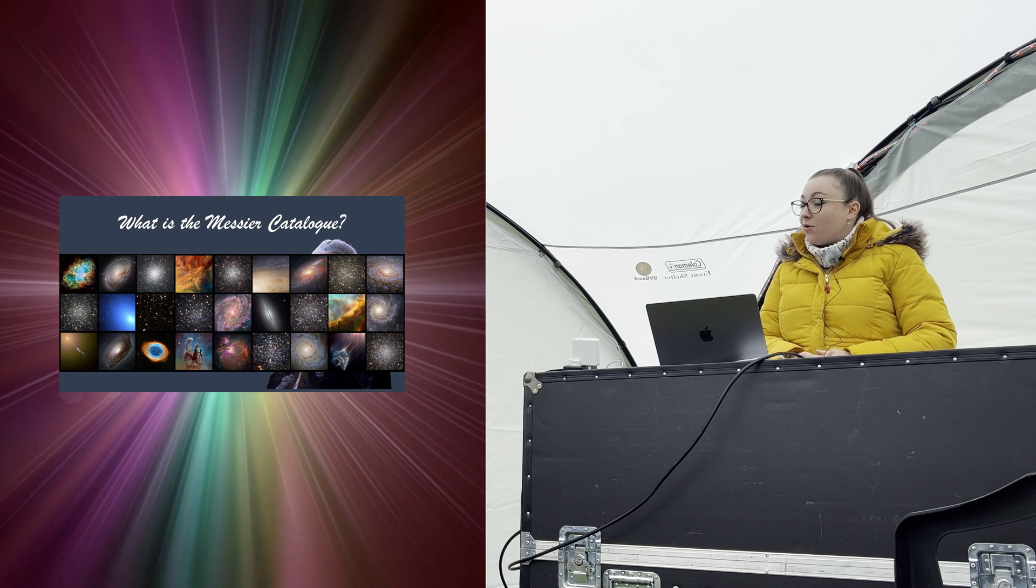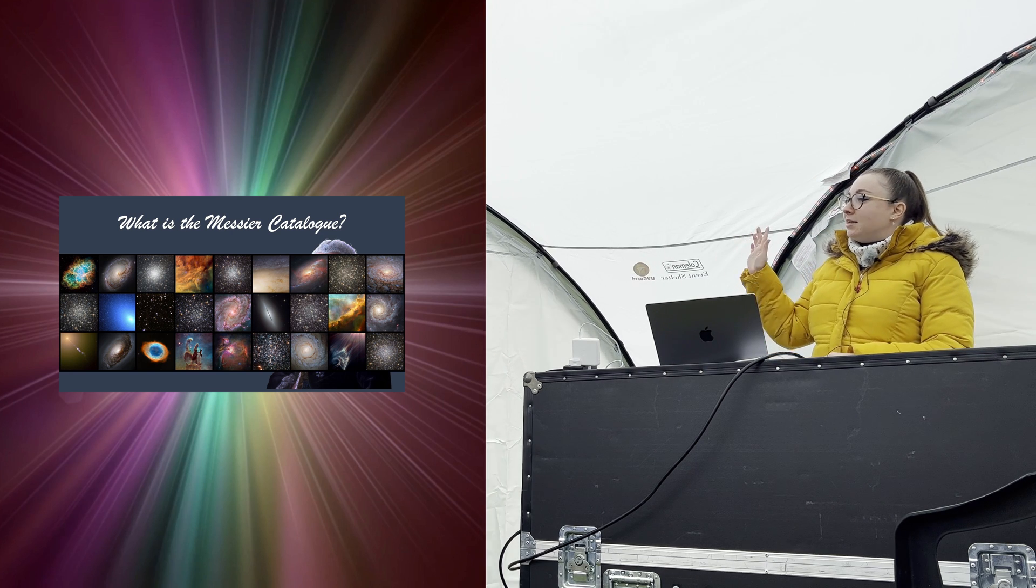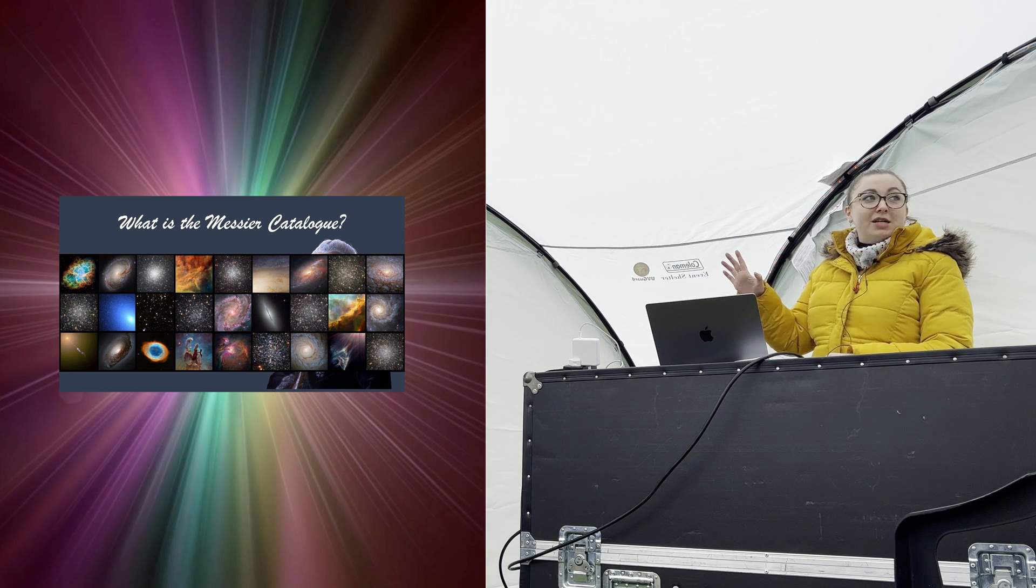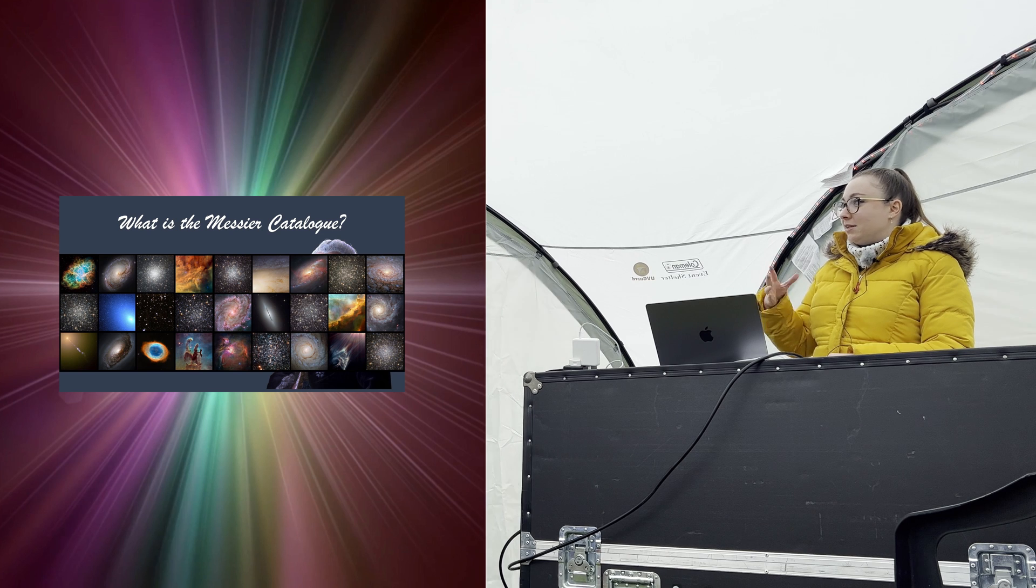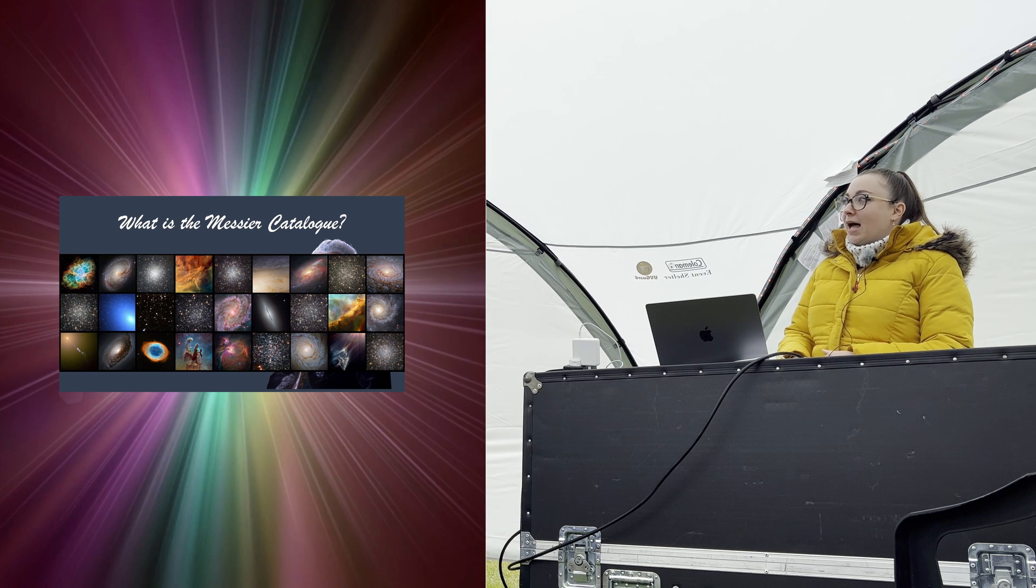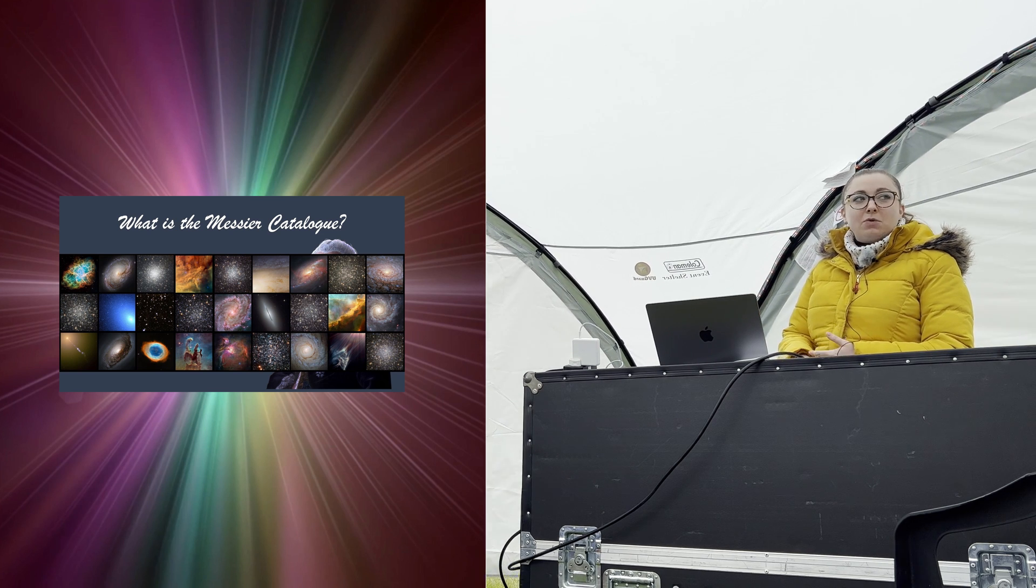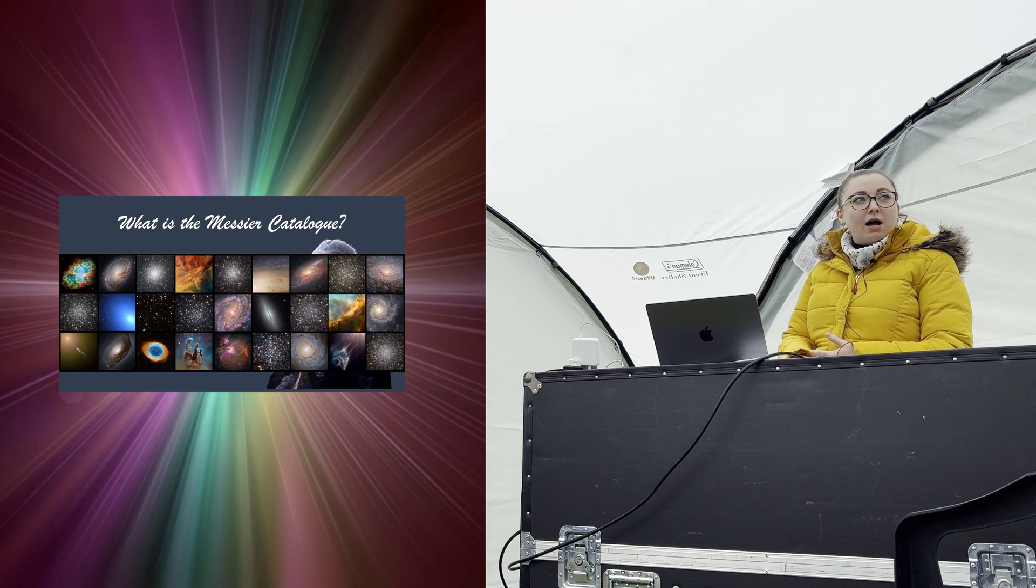And there are also nebulae. This is an example of all Hubble images of things which are in the Messier Catalog. You've got the Ring Nebula, you've got the Orion Nebula, there's all sorts of things going on. And I think everything can be seen with a pair of binoculars under dark skies, so you don't need good equipment to really enjoy the Messier Catalog.